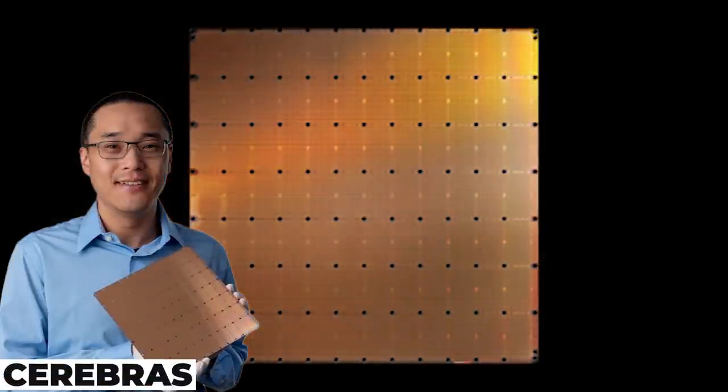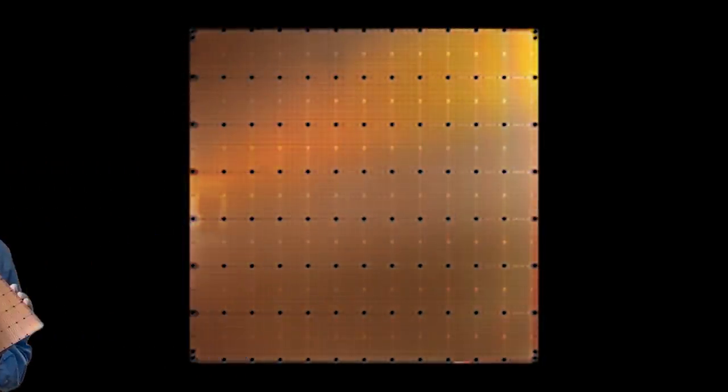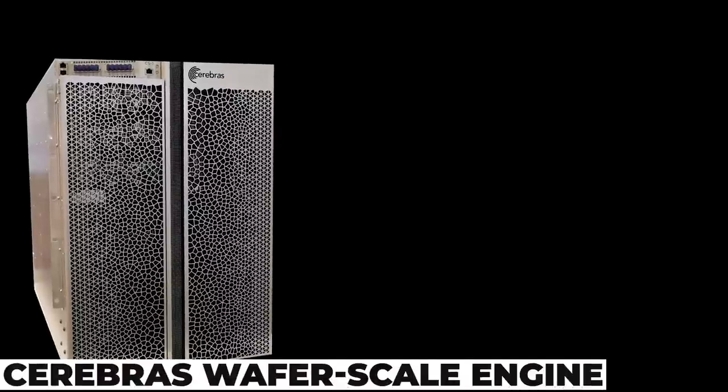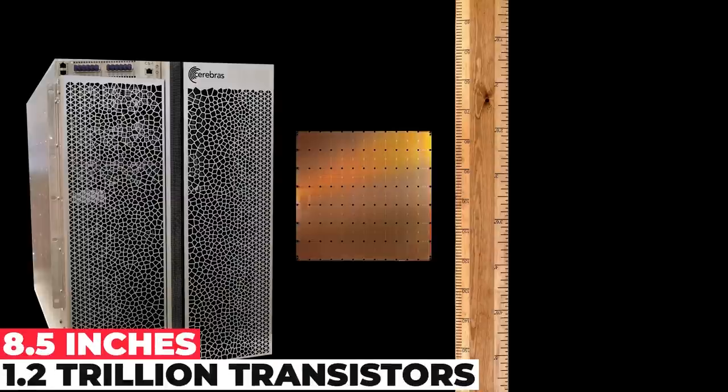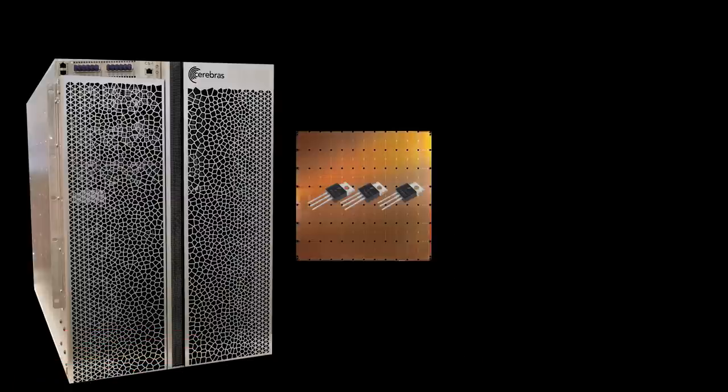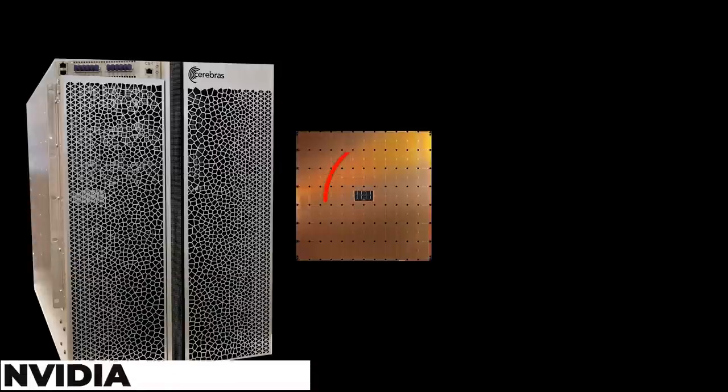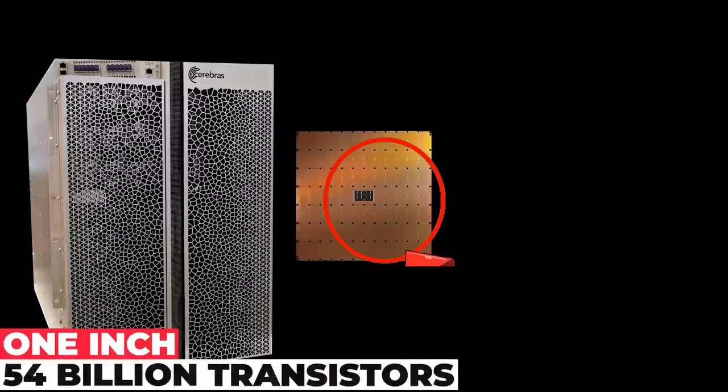At least, that's what Cerebrus, the creator of the world's biggest computer chip, hopes for. The Cerebrus wafer scale engine is massive, no matter how you cut it. The chip is 8.5 inches to the side and contains 1.2 trillion transistors. The next biggest chip, the NVIDIA A100 GPU, measures just one inch at a time and has only 54 billion transistors.